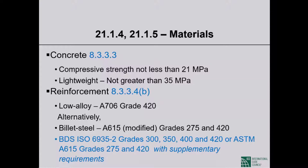The concrete compressive strength cannot be lower than 3,000 PSI. There is no upper limit on the strength of normal-weight concrete — that is significant. For lightweight concrete, we cannot have strength higher than 5,000 PSI, because for higher-strength lightweight concrete members we simply do not have test results under reverse cyclic loading.